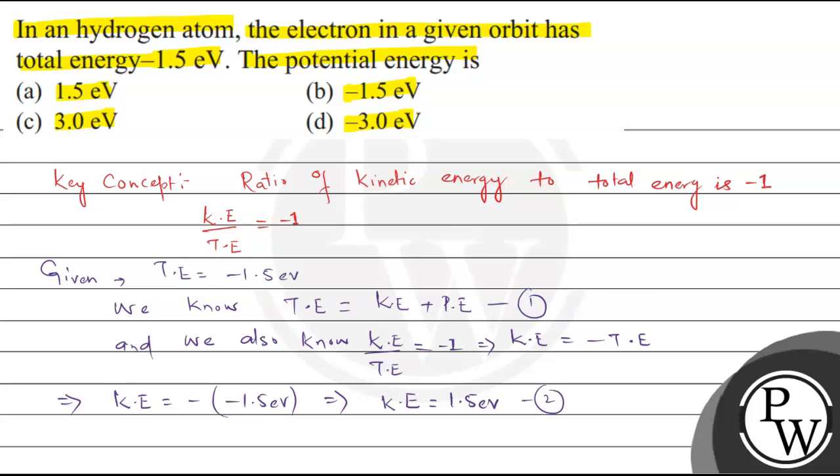Now we know total energy is minus 1.5, which equals 1.5 plus potential energy. That implies potential energy is equal to minus 3.0 electron volts.